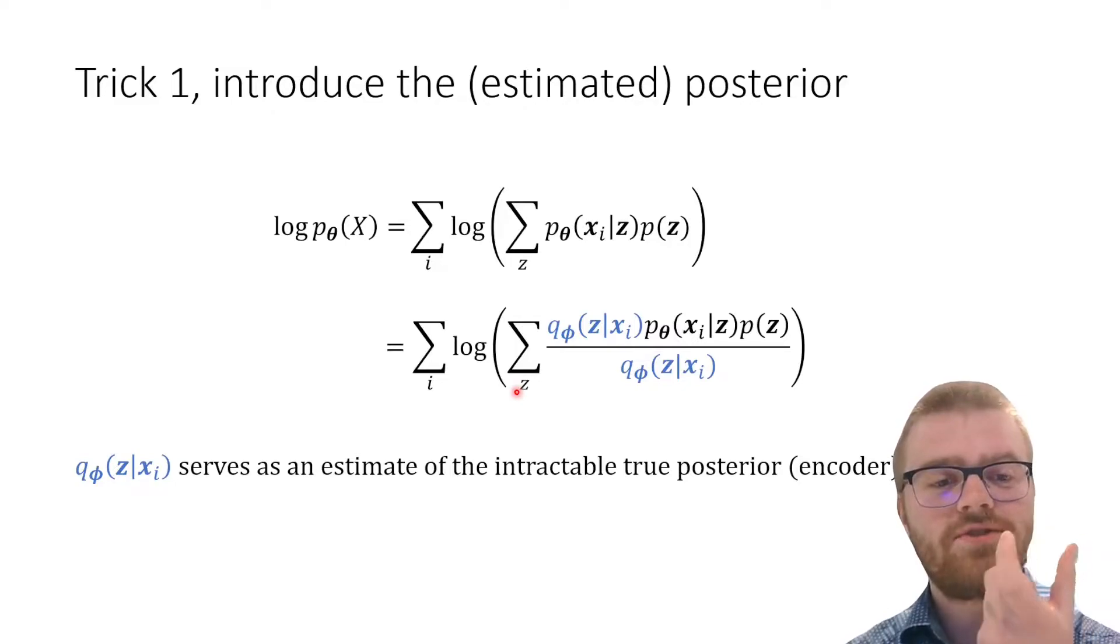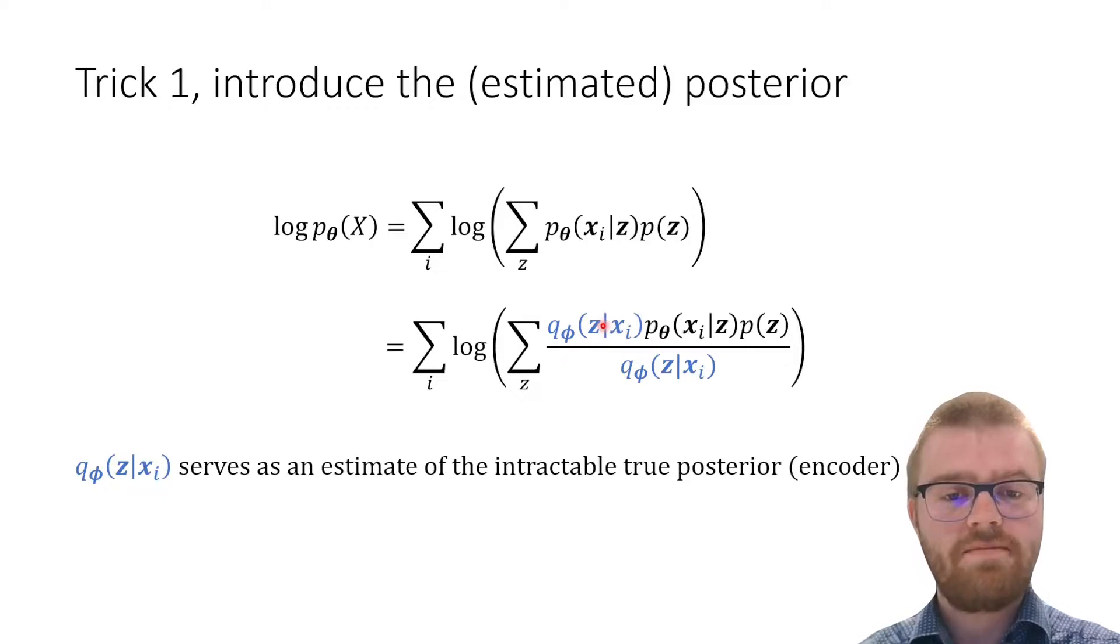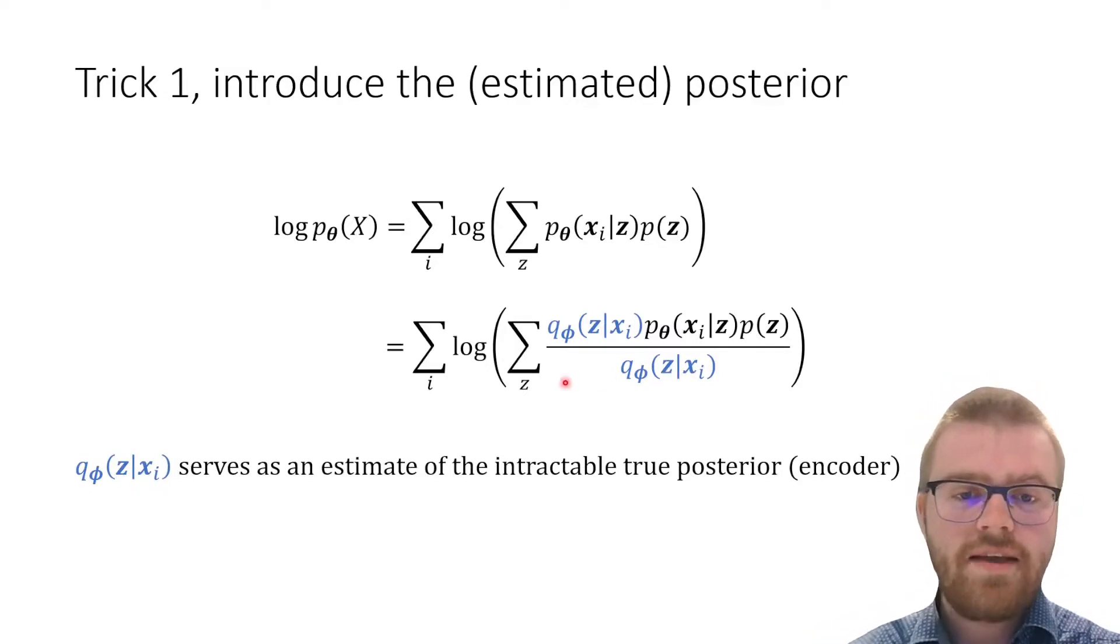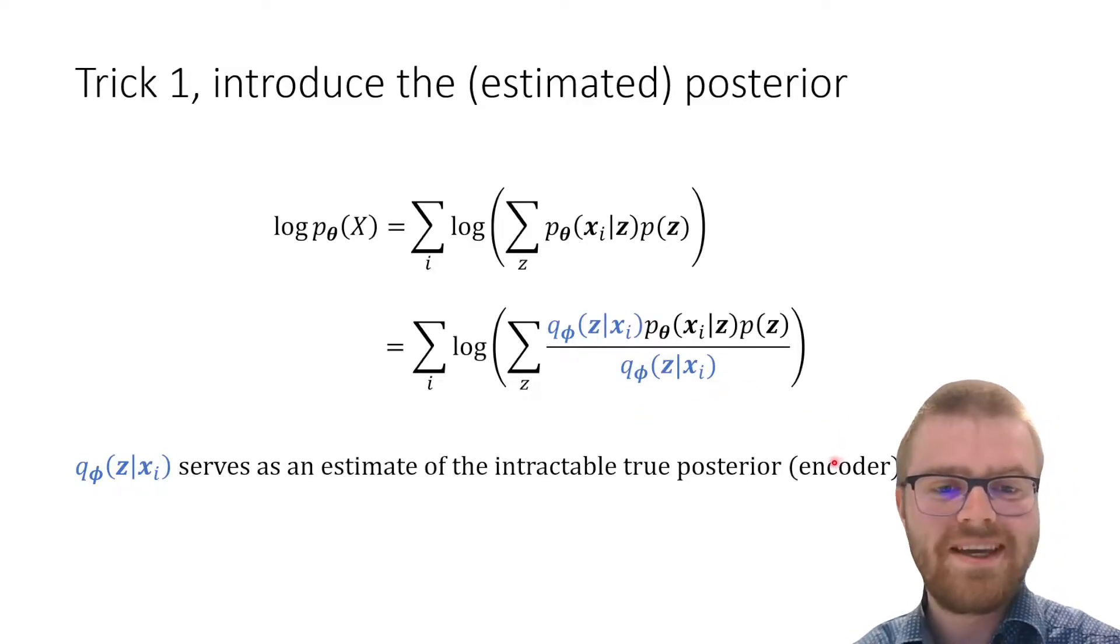Trick one is we are going to introduce the estimated posterior. We already had x given z, and now we're going to introduce z given x here in blue. And if we multiply by that thing divided by itself, that's the same as multiplying by one, which is completely allowed. We can already see what this blue part is going to be—it's going to be the encoder.